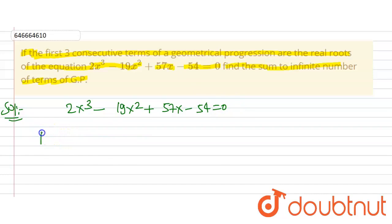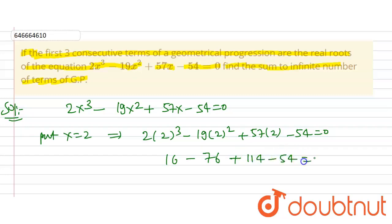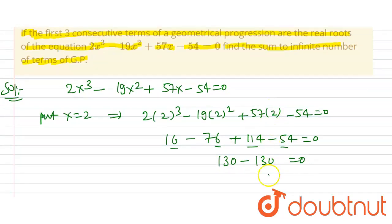We have to find the roots of this equation which are in the GP — geometric progression. Let's put x equal to 2 to find the roots. Substituting: 2³ minus 19 times 2² plus 57 times 2 minus 54 equals zero. This gives 8 minus 76 plus 114 minus 54, which on the left-hand side adds up to zero. So x equals 2 is a root of the given equation.